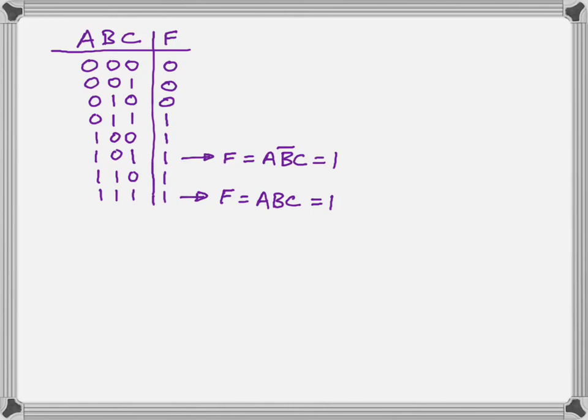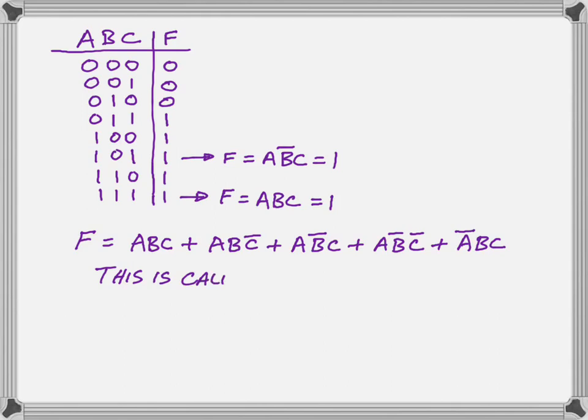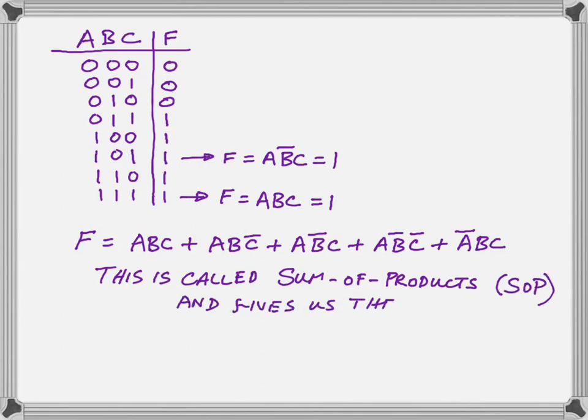And if we can do that for that row, we can do it for any of the other rows. So after we have done it for all five rows where the function is actually a one, we can combine the ones to give us the total function by using OR operators as shown below.